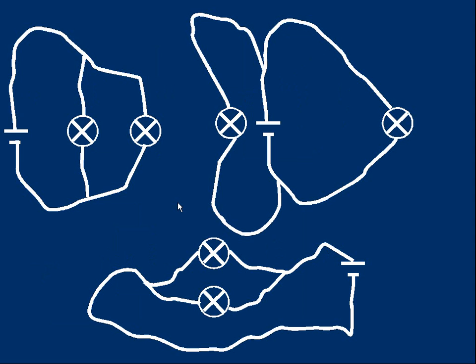When we look at actual wiring it can be quite complicated, but all three of these diagrams represent two bulbs connected in parallel to a cell. Make sure you can recognize parallel connections when you look at wiring.